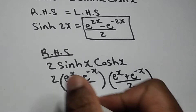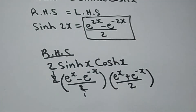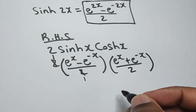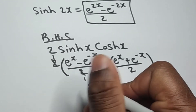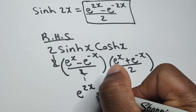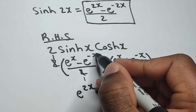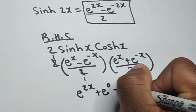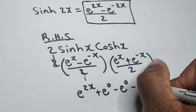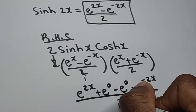We can use the 2 out front to cancel the denominators: 2 goes into itself once, and 2 goes into itself once there as well. Now we multiply numerators by numerators. e to the x times e to the x gives us e to the 2x. e to the x times e to the minus x gives us e to the 0. Negative e to the minus x times e to the x gives us minus e to the 0. Negative e to the minus x times e to the minus x gives us minus e to the minus 2x. All over 1 times 2, which is 2.